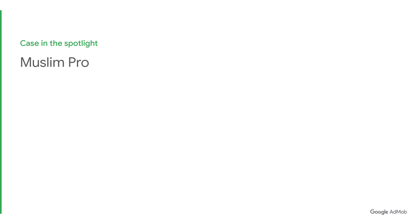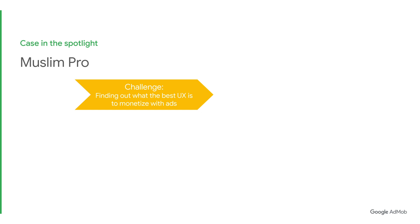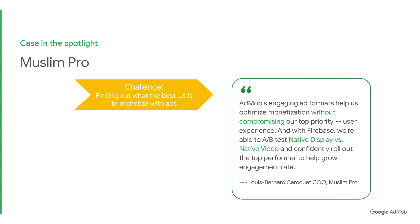Muslim Pro is one such case. Their challenge was to create the best user experience while also maximizing monetization, but they didn't know what the best user experience entailed and what type of ad format suited them best. So they engaged in A-B testing for native display and native video. In doing so, they found their optimal ad formats and implementation technique. This resulted in a 43% increase in eCPMs and a respective 30% rise in revenue.